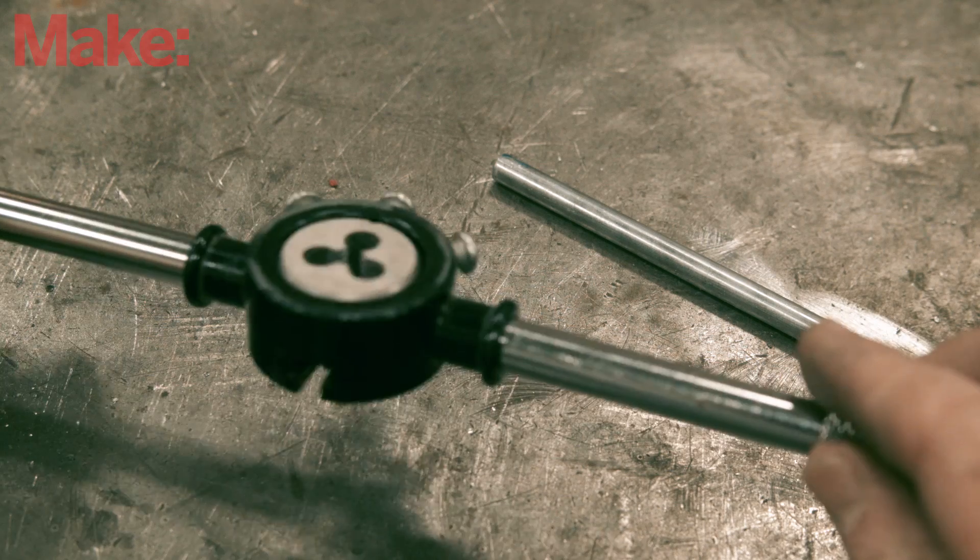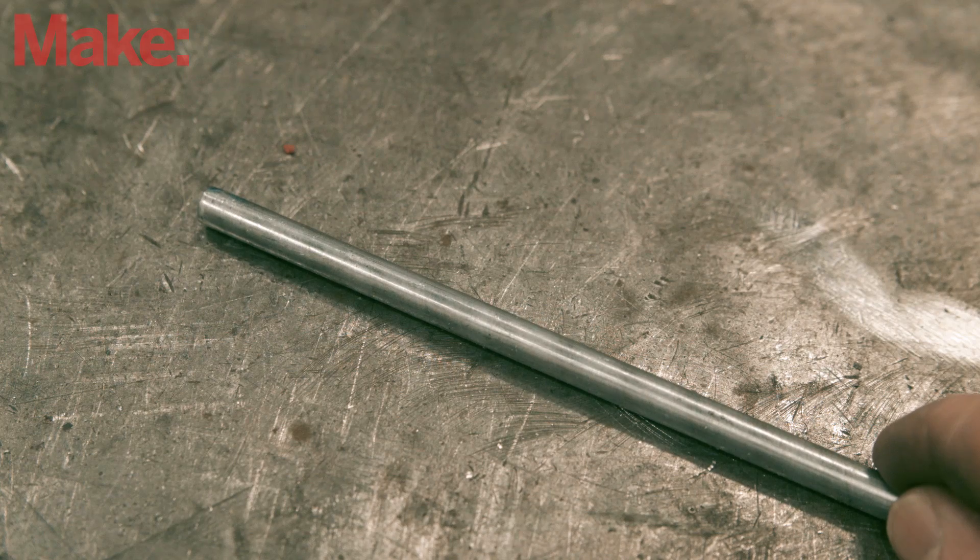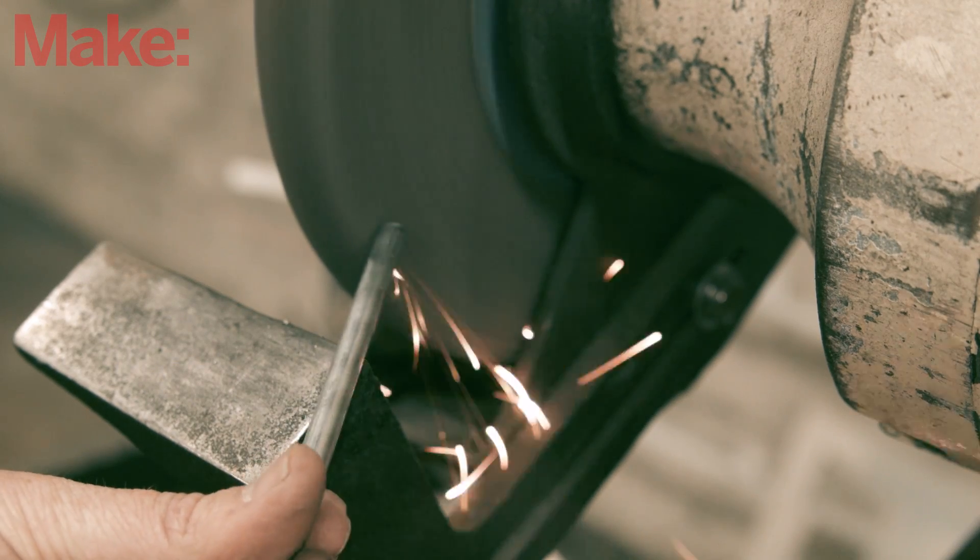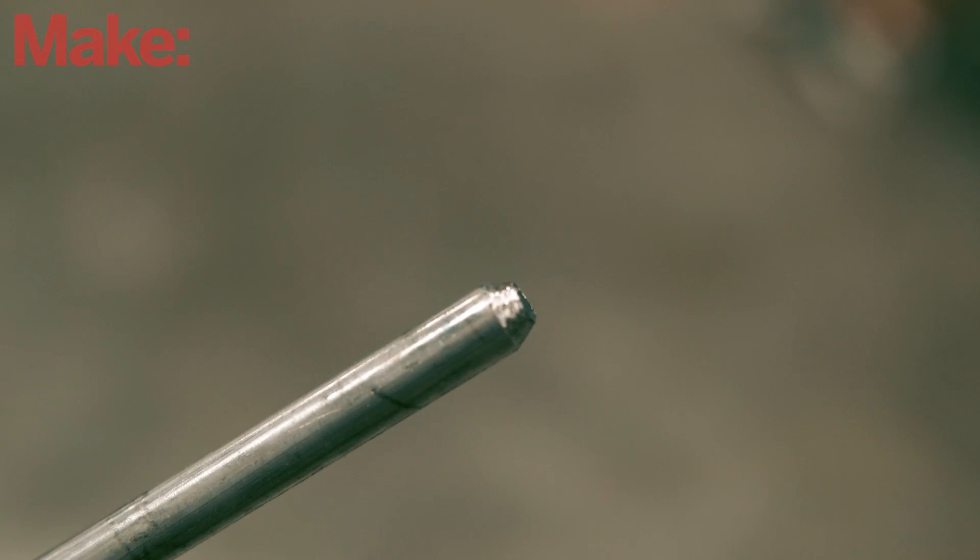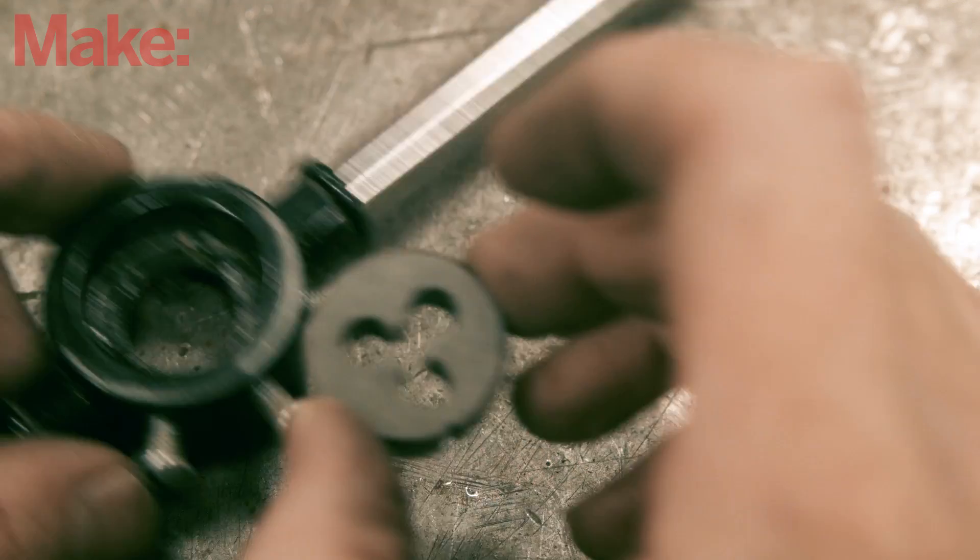A die is basically the inverse of a tap. It cuts threads onto the outside diameter of a rod. The rod's diameter will dictate which die you use. To prepare the rod for threading, just file or grind a bevel onto the end so it's easier to turn the die onto it.